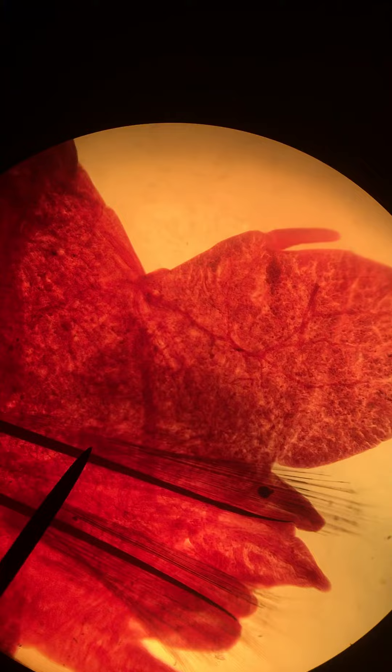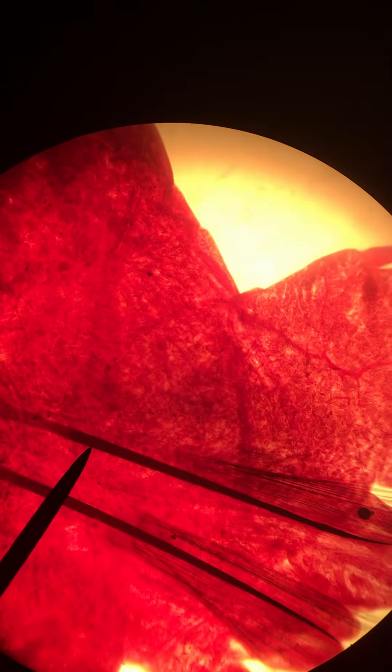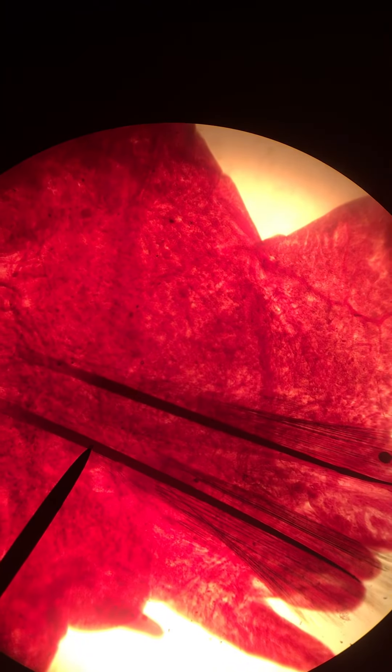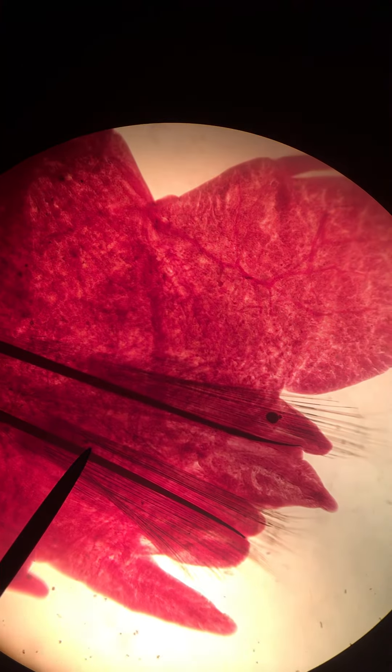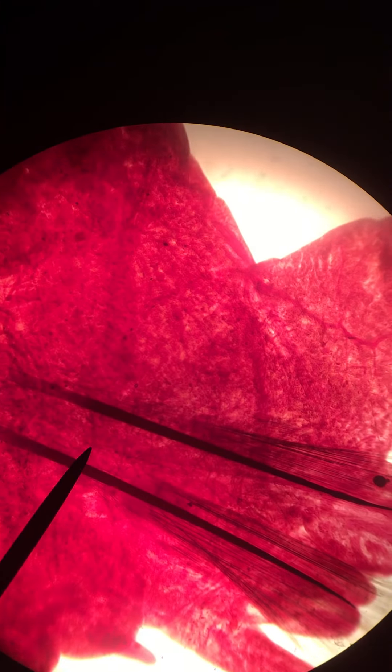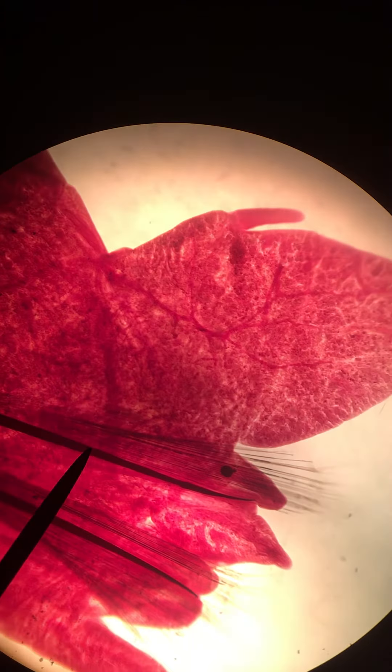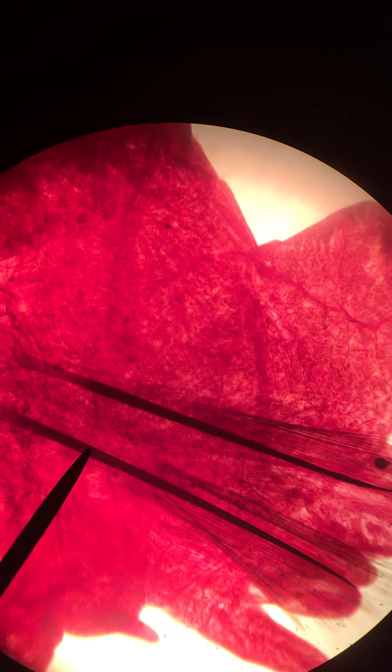The two dark structures here, this and this, are the aciculi. These are chitinous rods that are support structures in the parapodium.